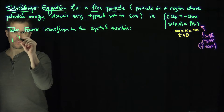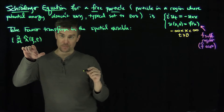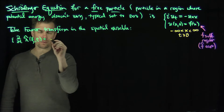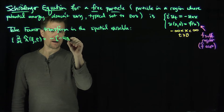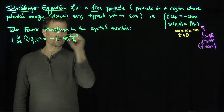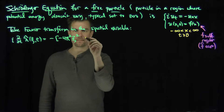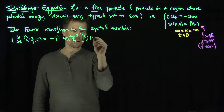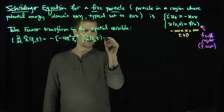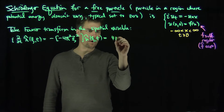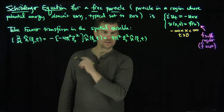Taking the Fourier transform in the spatial variable, we get: i · ∂/∂t of û(ξ, t) equals negative (−4π²ξ²) û(ξ, t), because of the negative sign in the equation and taking two derivatives. By choice of sign convention, this becomes exactly 4π²ξ² û(ξ, t). This has turned the PDE into an ODE.